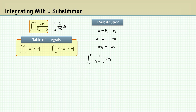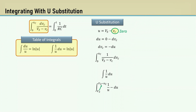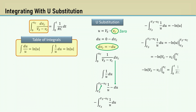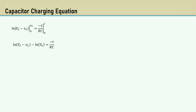Moving our left-hand equation over, I'll change the boundaries. When VC is equal to 0, then U will be VS and integrate to VS minus VC. Then replace dVC with minus dU. I'll move the minus sign to the left. From the table, the integral of 1 over U dU is the natural log of the absolute value of U. I will carry over the minus sign too, then integrate from VS to VS minus VC, and substitute VS minus VC back in. Then integrate from 0 to VC, and the right side from 0 to T. I'll move the minus sign to the right side.